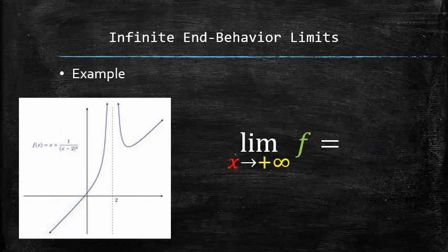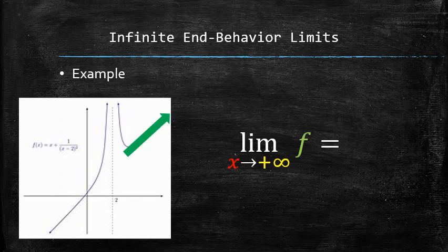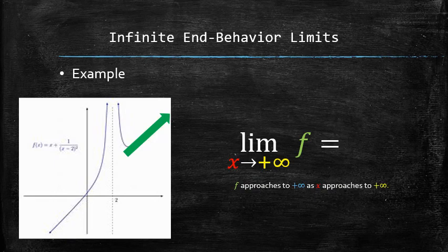Similarly, to find the non-asymptotic end-behavior limit on the right, we need to determine whether the graph increases or decreases indefinitely as x approaches positive infinity. It is easy to see that the function goes up — f approaches positive infinity as x approaches positive infinity. Therefore, the answer is positive infinity.